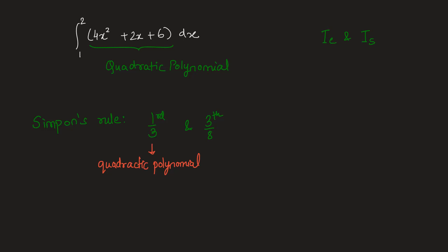Also, 3/8 Simpson's rule is based on cubic interpolation and therefore can estimate the exact value for a cubic polynomial or a polynomial having degree less than 3.